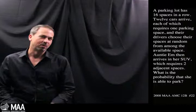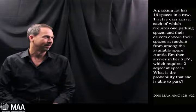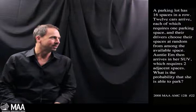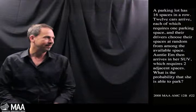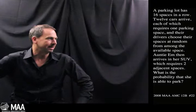G'day, welcome to another Curriculum Burst. Let's do an interesting grade 12 counting problem which goes as follows. A parking lot has 16 spaces in a row. 12 cars arrive, each of which requires one parking space and the drivers choose their spaces at random among the available spaces. Auntie M then arrives in her SUV which requires two adjacent spaces. What is the probability that she will be able to park?